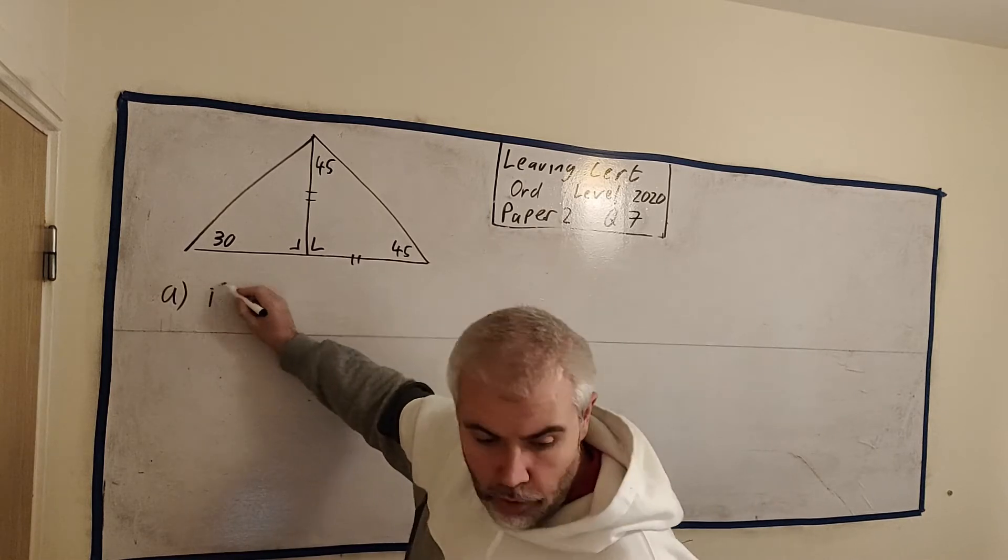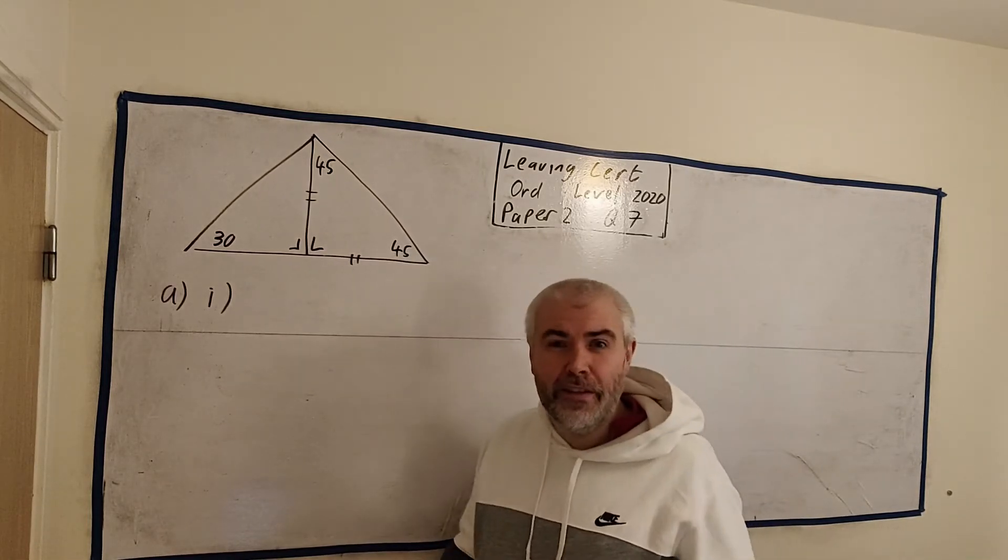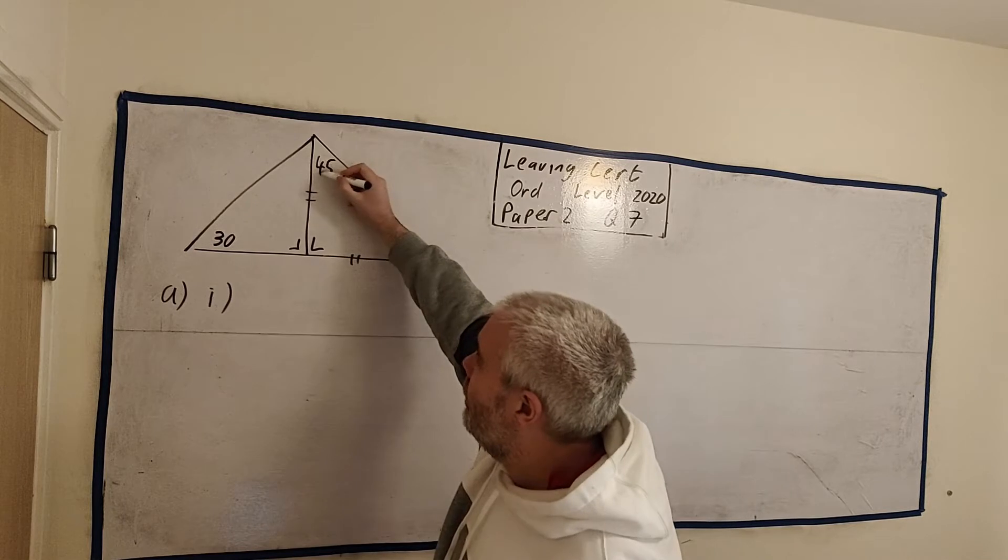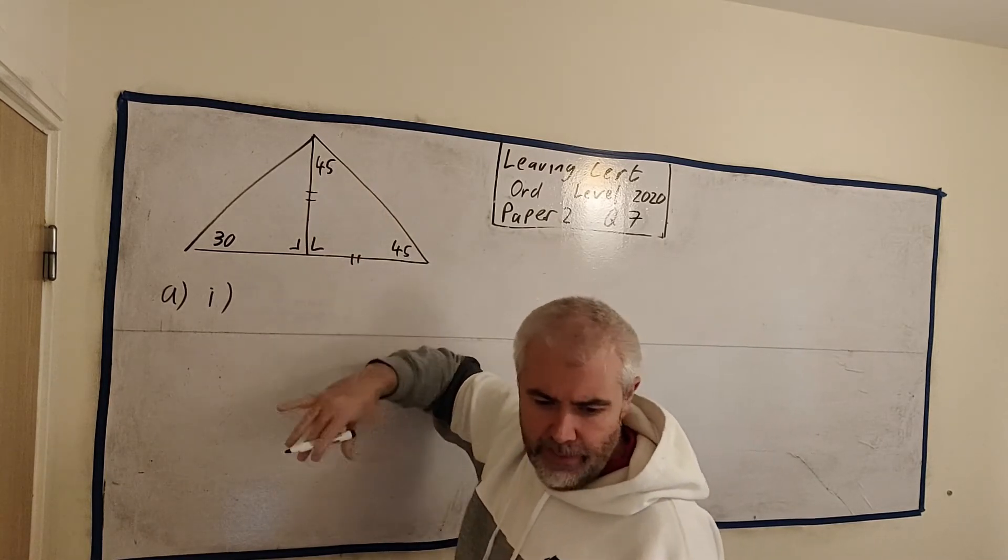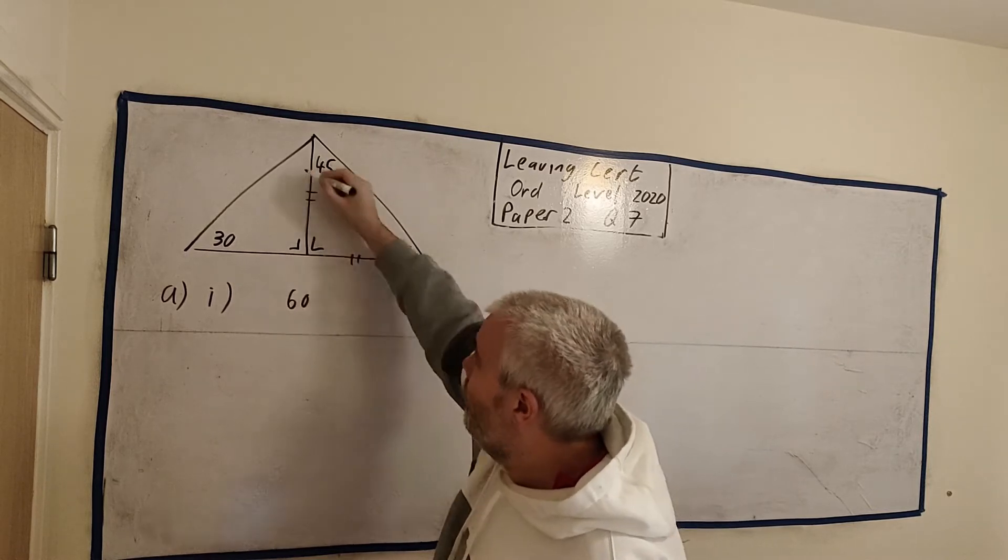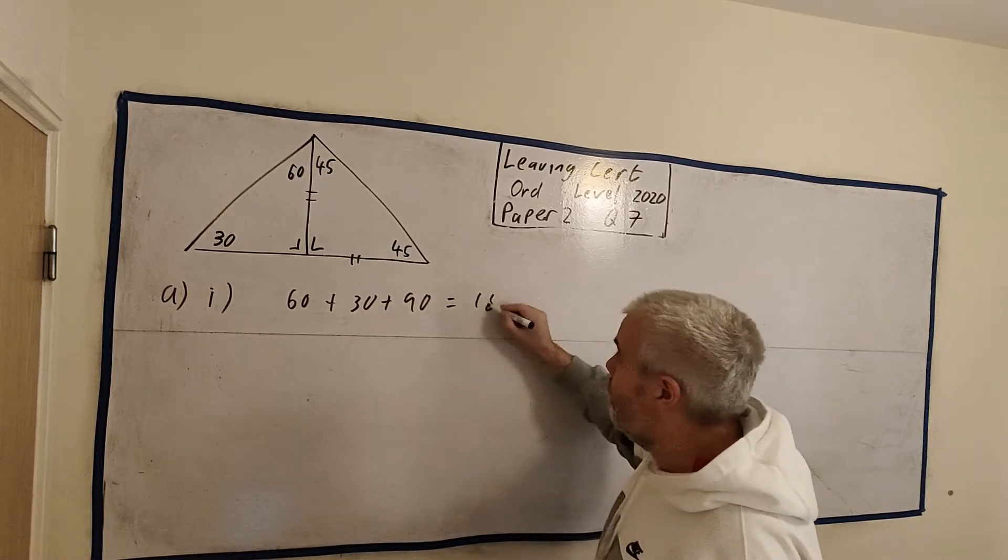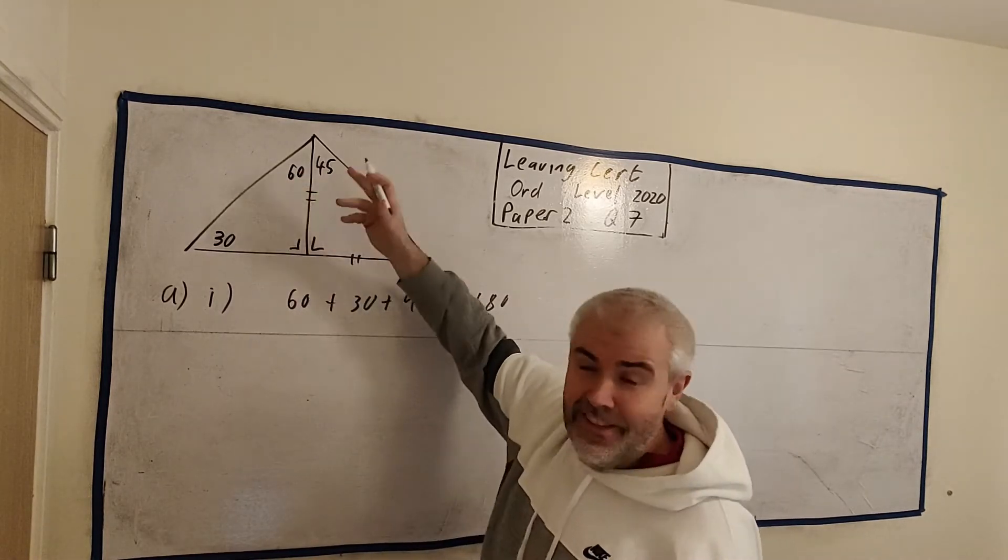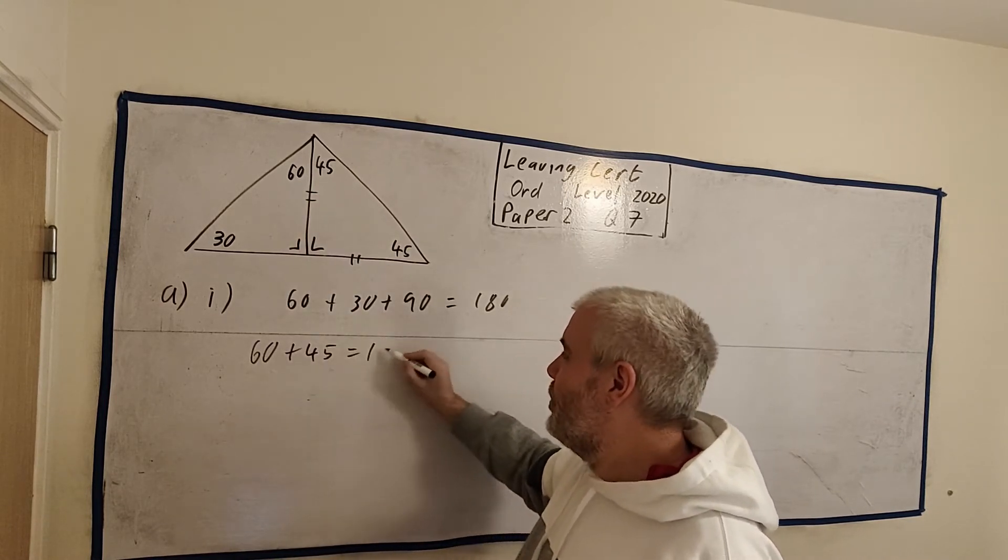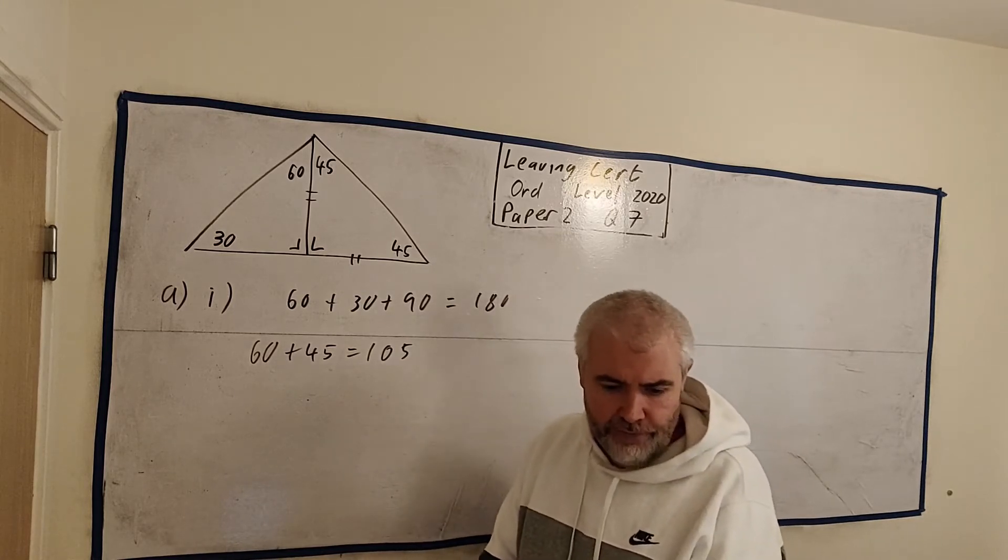So part A, part 1, they ask us to show that this angle up here is 105. Really what they want is just to find this angle and show your working. So I would tell them that this angle up here, I'd maybe name it ACD, this angle in here. ACD is equal to 60, because 60 plus 30 plus 90 equals 180. And now I just add these together. These two added together, 60 plus 45 equals 105. I think it's quite an easy question.